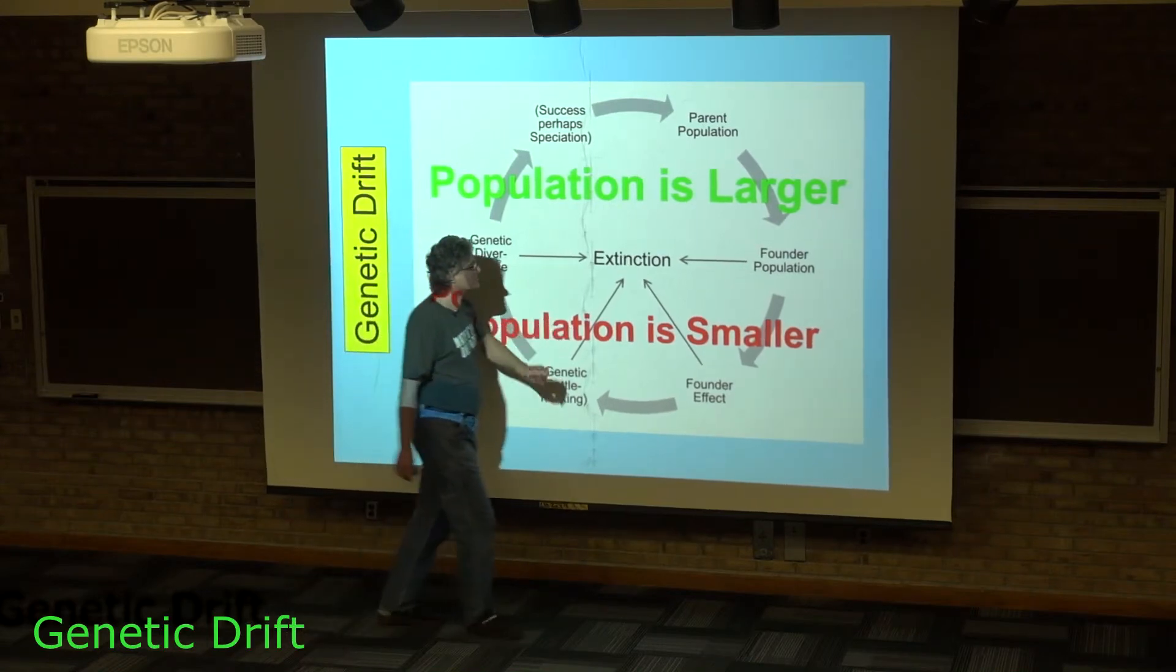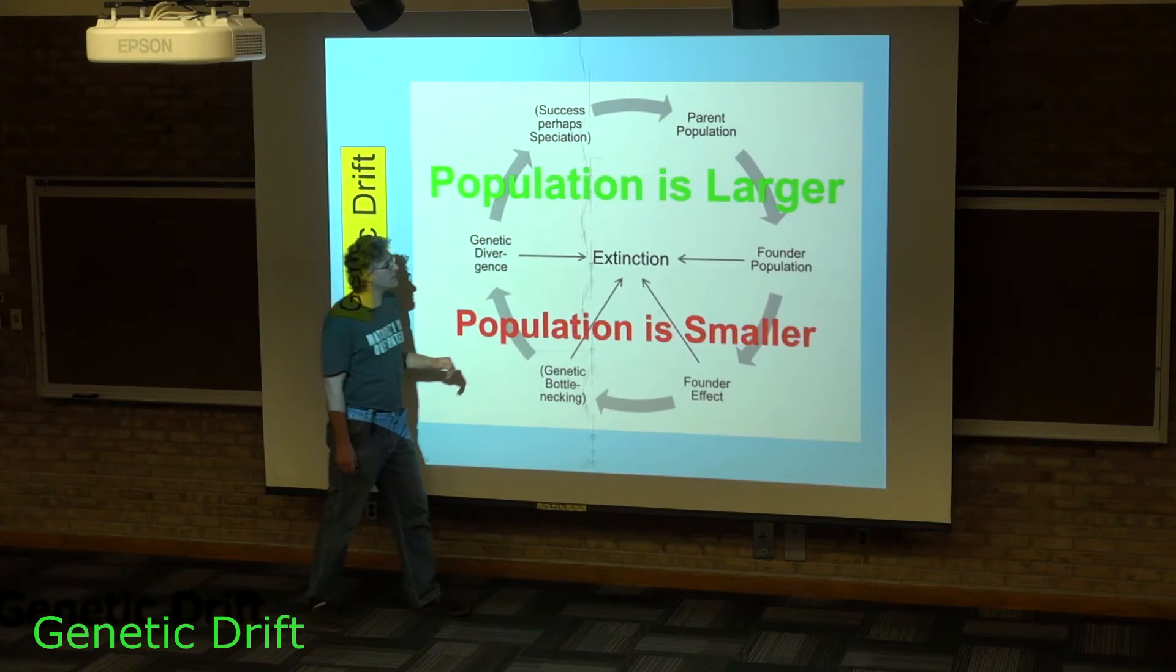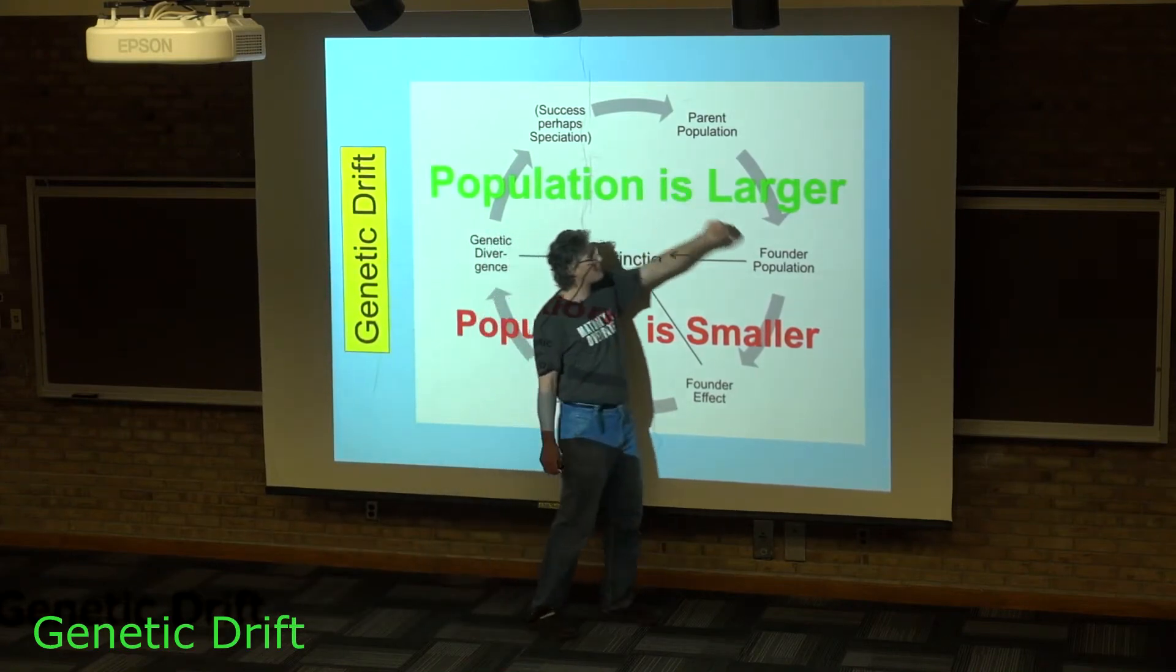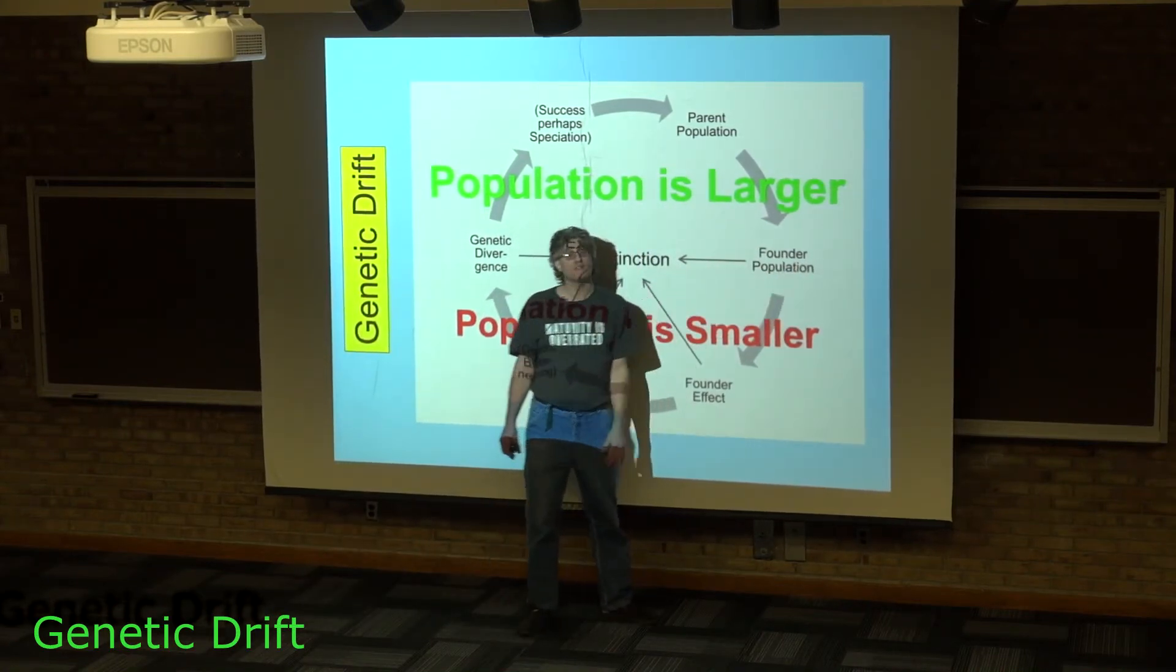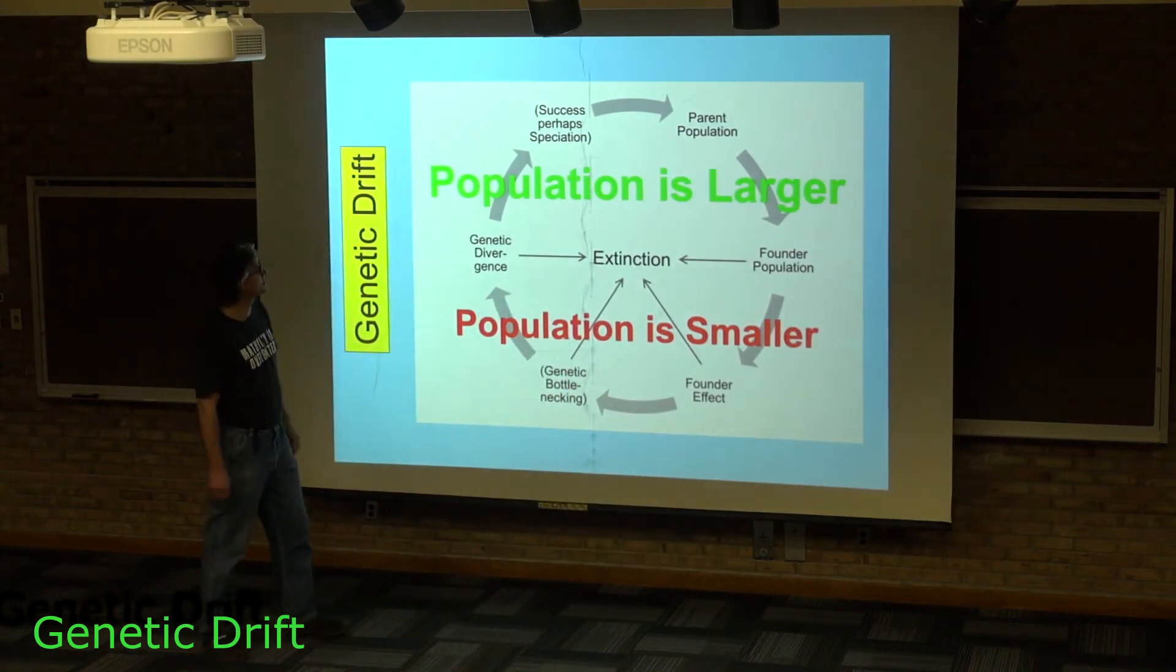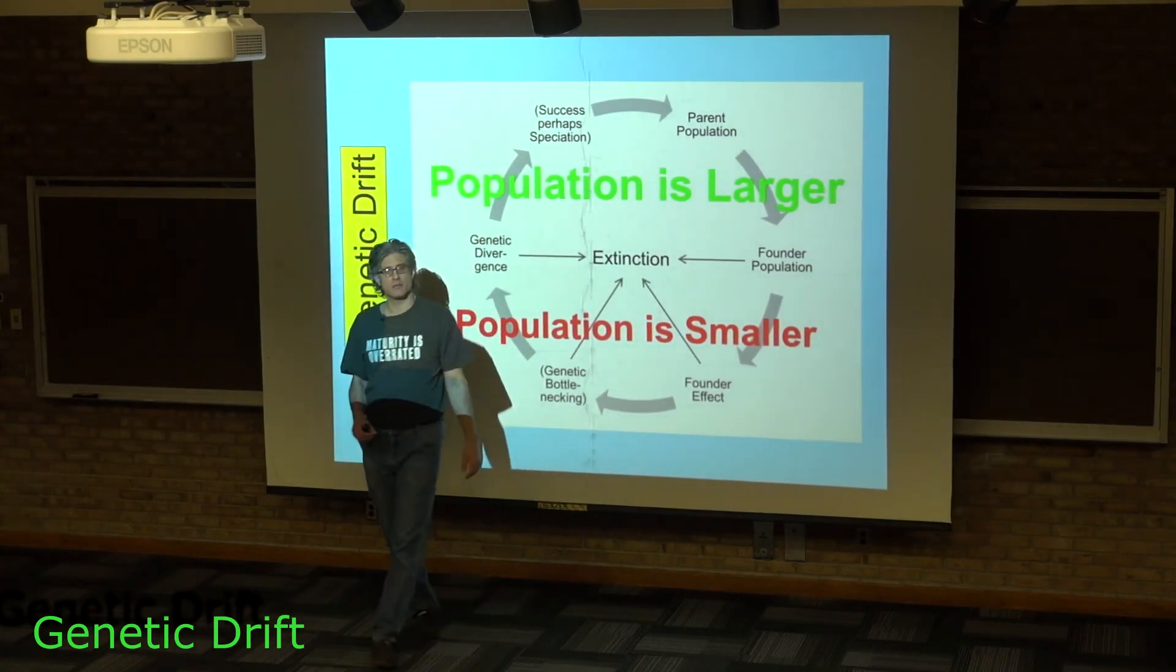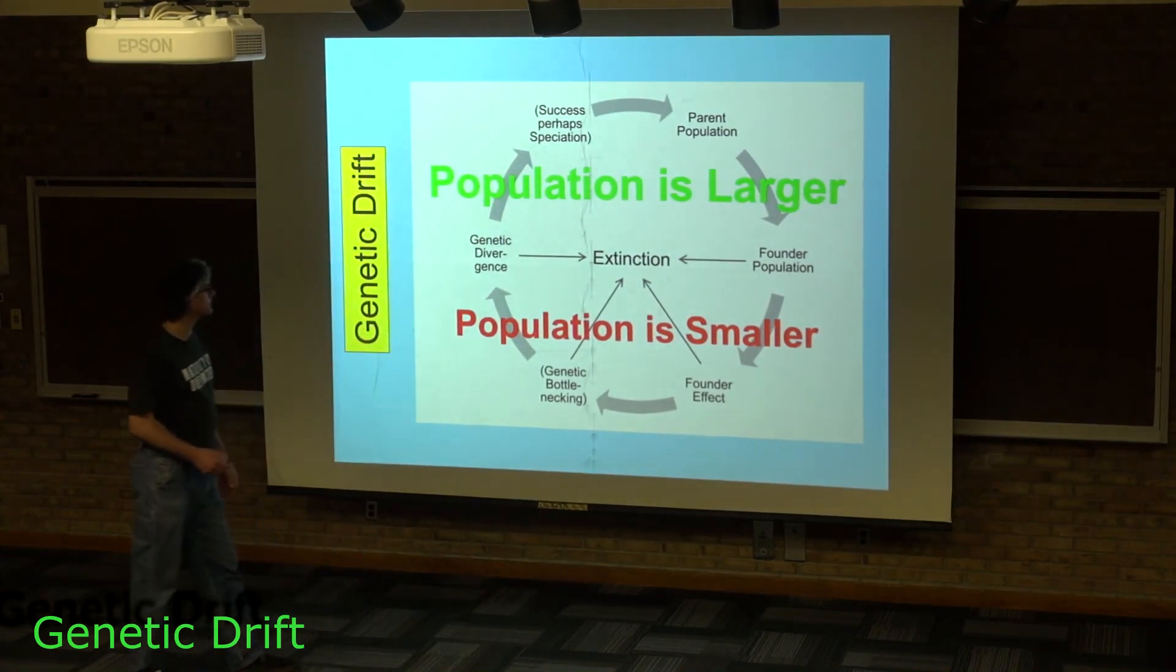When your population size is small, you're much more susceptible to extinction. So in a sense, these big populations can throw off founder populations left and right. But most of those founder populations will go extinct; occasionally one will be successful. And those are concepts that we'll get back to when we talk about speciation.